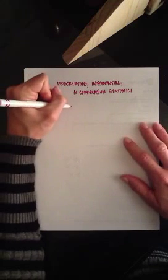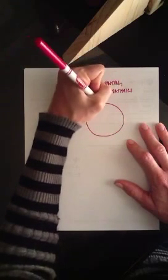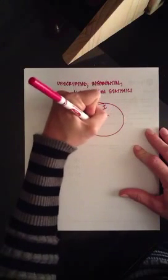So if I were going to represent it by a Venn diagram, inferential statistics might be here, and then correlation statistics are a subset of that.